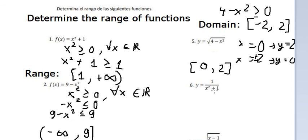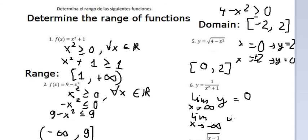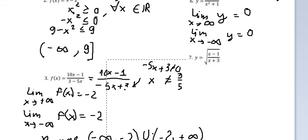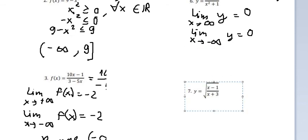For the next one, when s approaches positive infinity or negative infinity, the function goes to zero. This is because we have s squared over a positive number. The highest value occurs when s equals zero, giving y equals 1. So the range of this situation is from zero to number one.